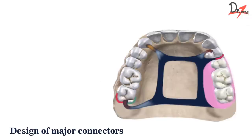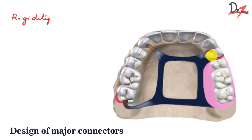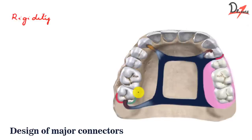The first and very important requirement was rigidity. The major connector should be rigid because a rigid major connector will distribute forces equally to the abutment teeth, and hence there would be least chances of damage to any area. The major connector also makes the other components effective — the retentive clasp, the rest — all these components will be effective only if we have a rigid connector.